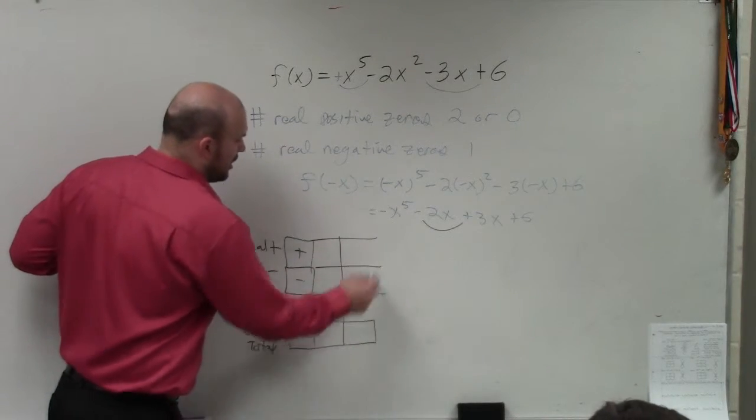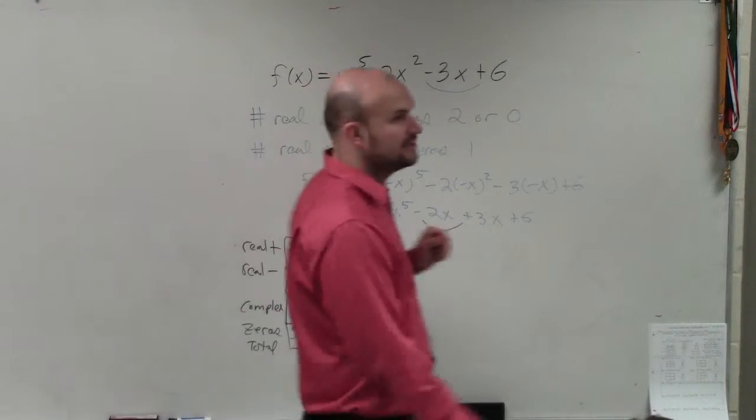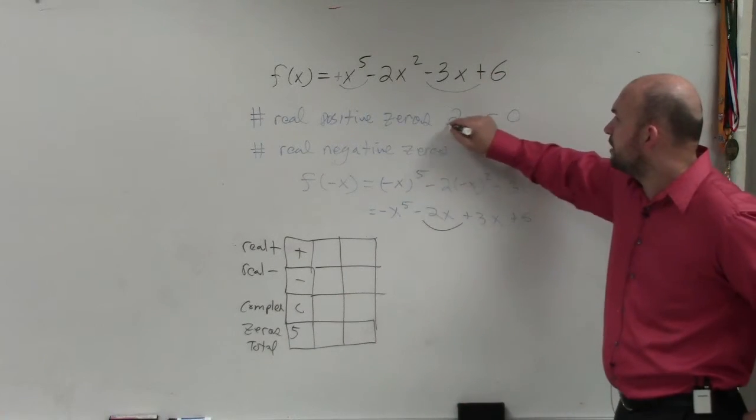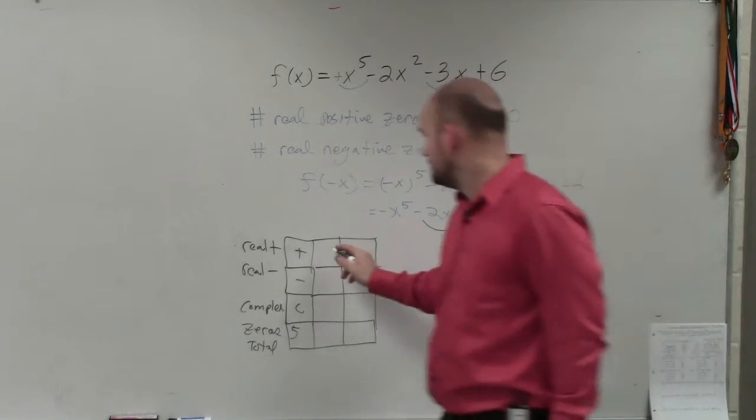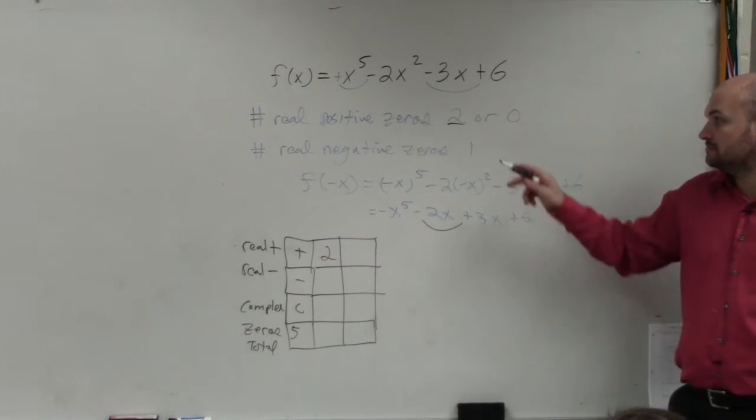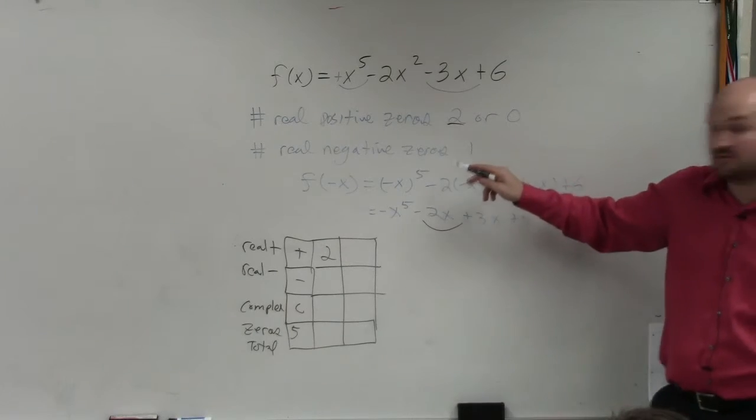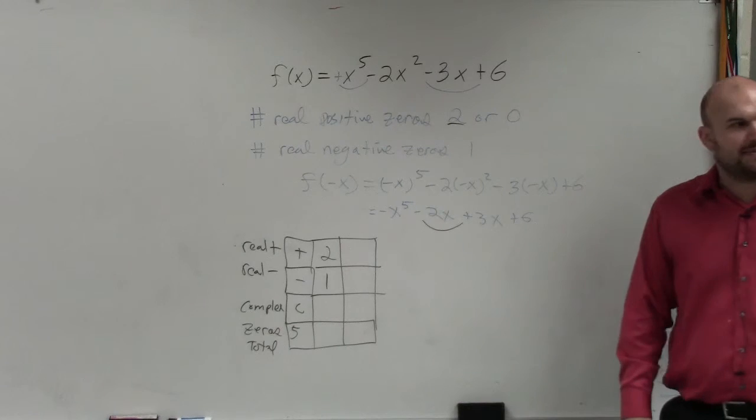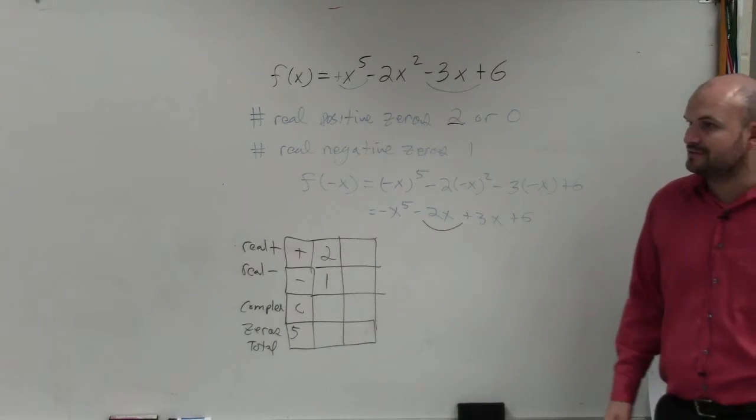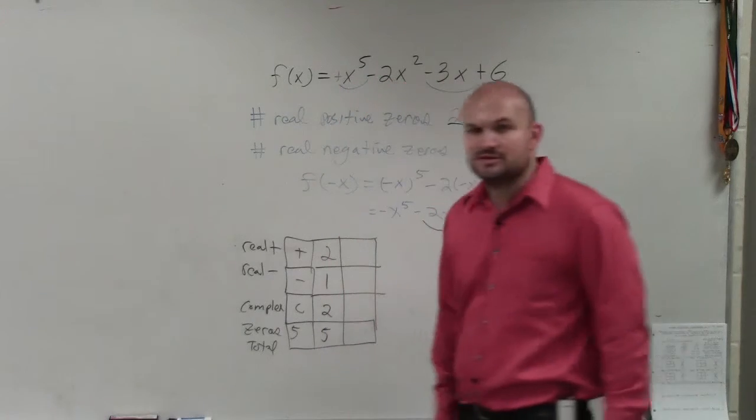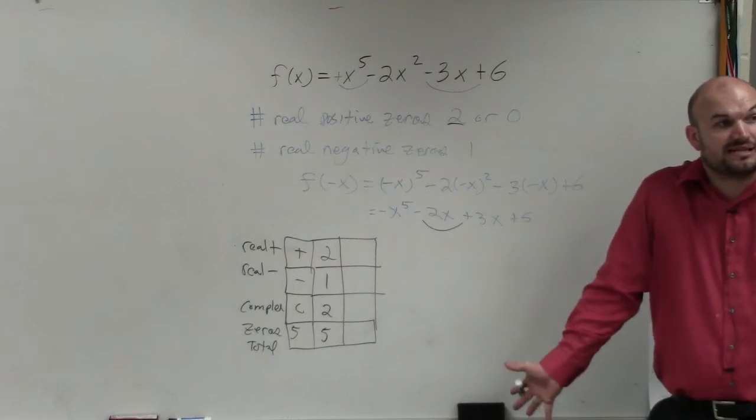Everybody agrees with me? We could have real positive, real negative, and complex. But it has to equal five. So all I'm going to do is let's go through our options. Because we only have two options, really. Actually, we have two other options. First option is, what if we have two positive? How many negative do we have to have? One. Negative is always one. So therefore, if I have two positive and one negative, how many complex do I have to have? Two. Just make sure you add them up to make sure they get five. Because the fundamental theorem says you have to have five.